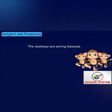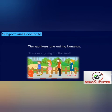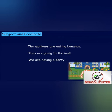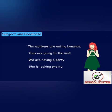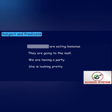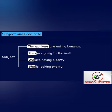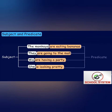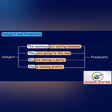Let's revise with more examples. The monkeys are eating bananas. They are going to the mall. We are having a party. She is looking pretty. The subjects are: The monkeys, They, We, She. And the predicates are: are eating bananas, are going to the mall, are having a party, is looking pretty.